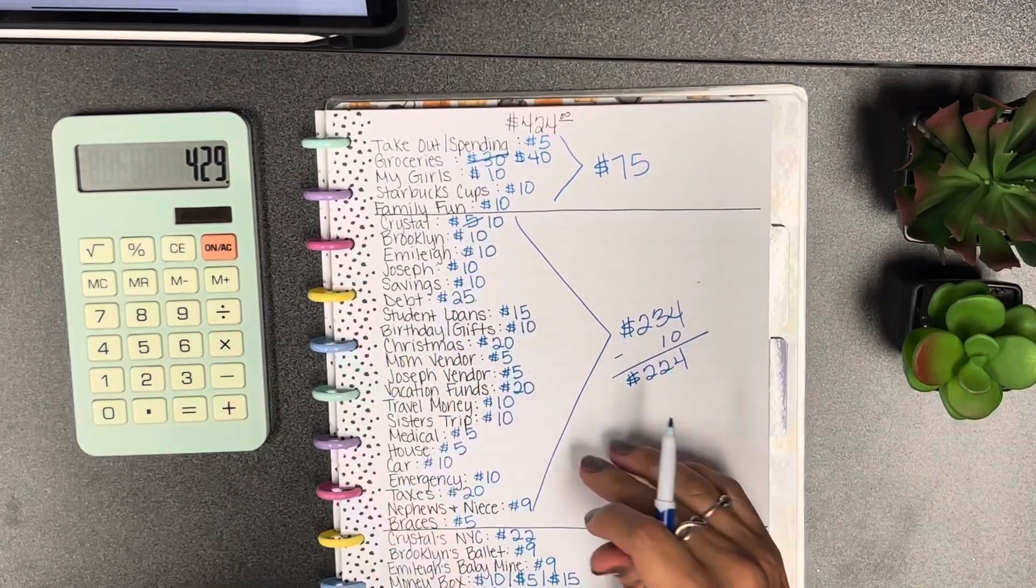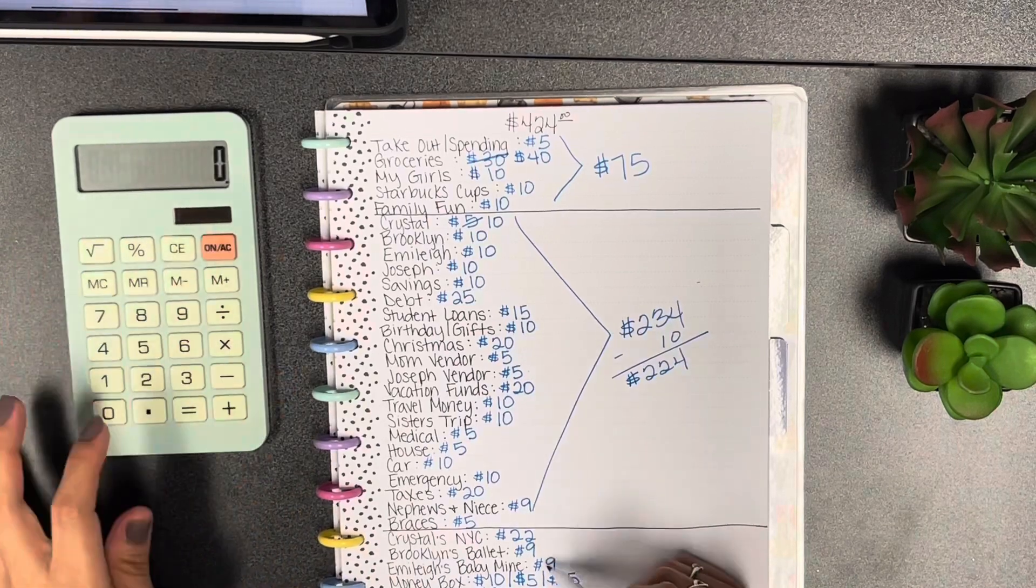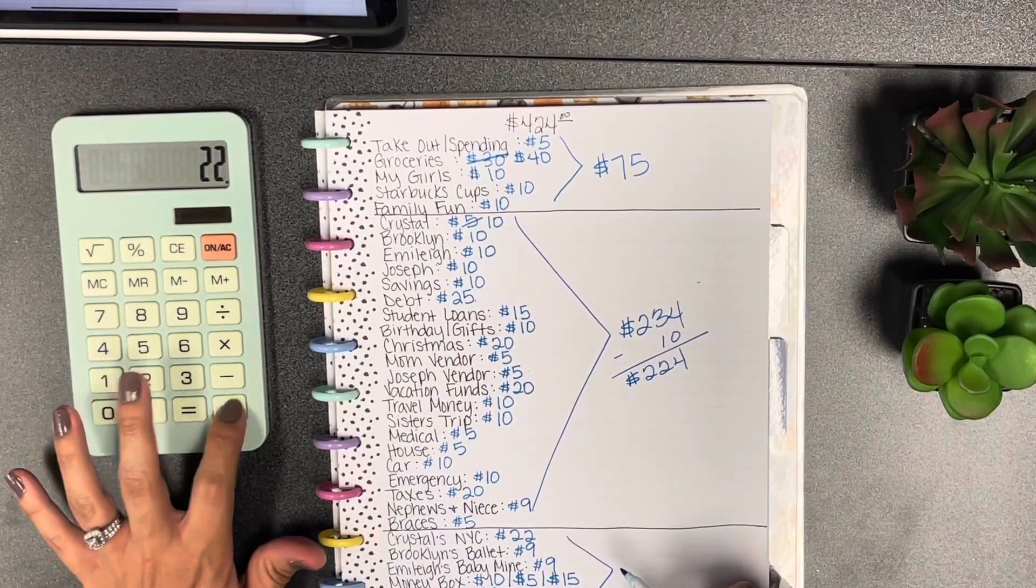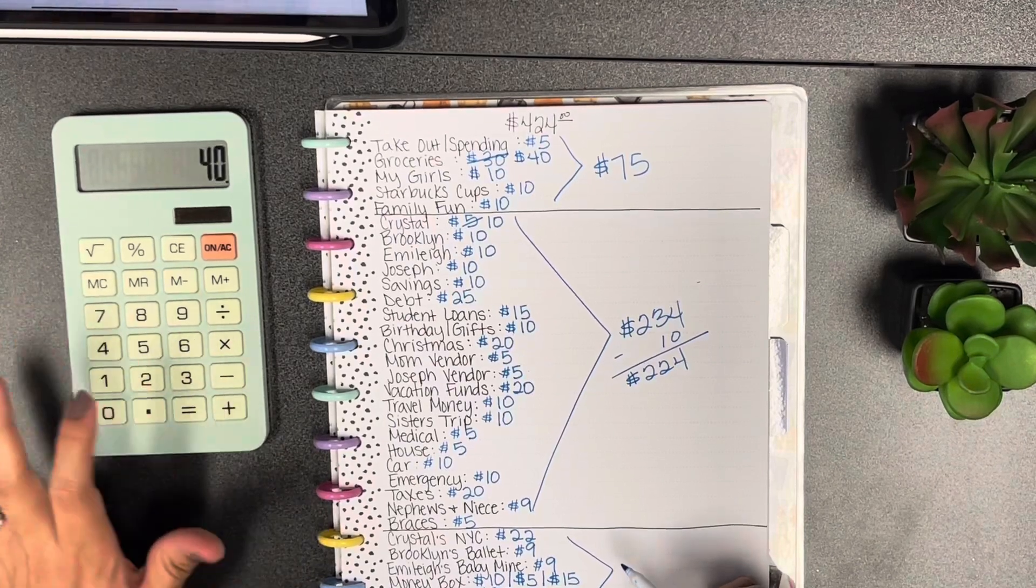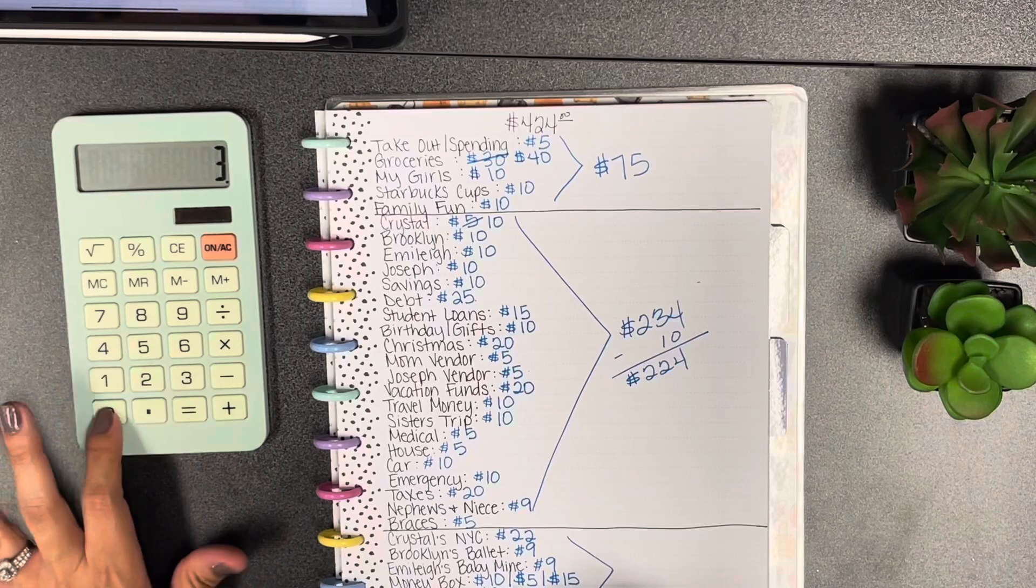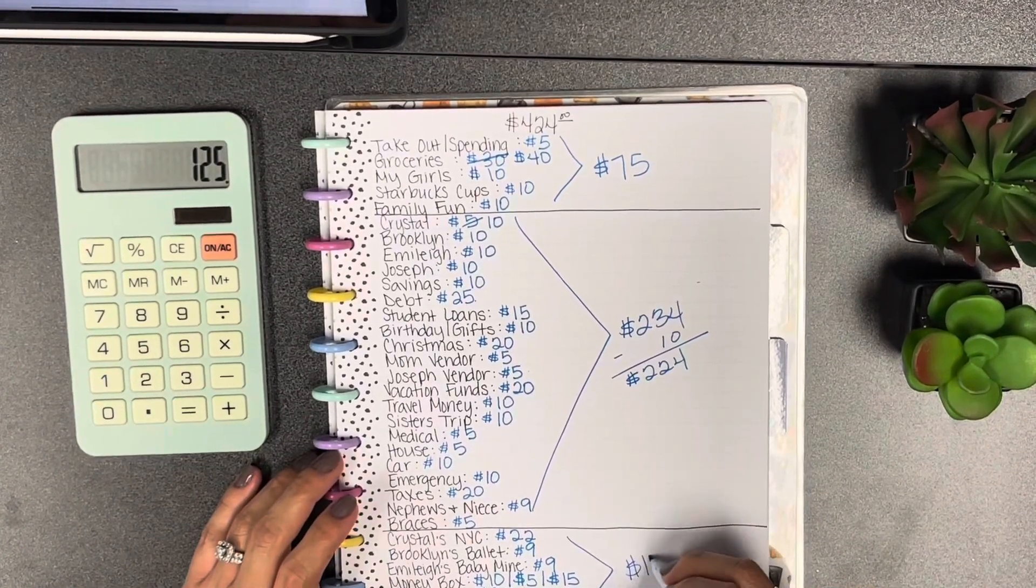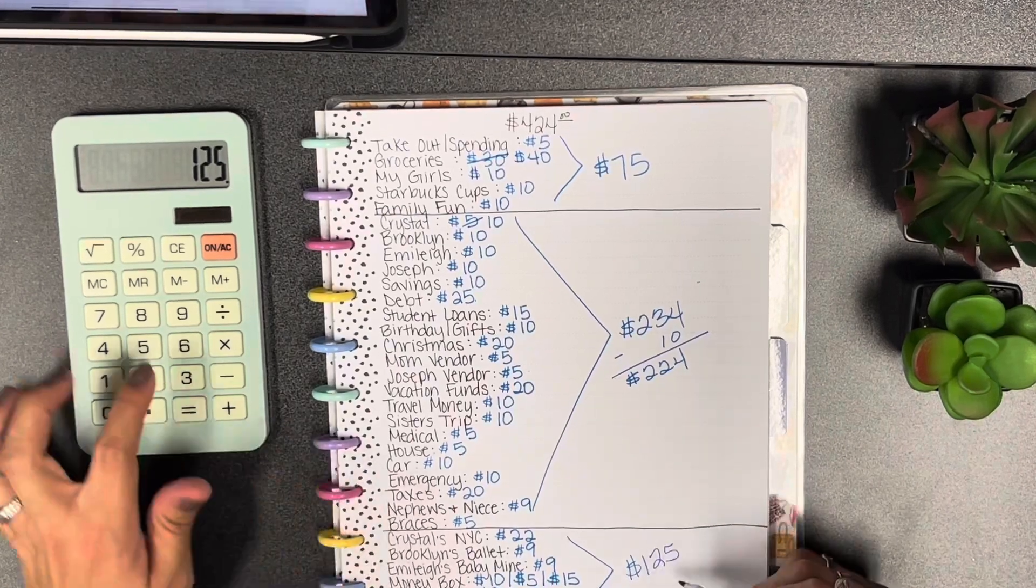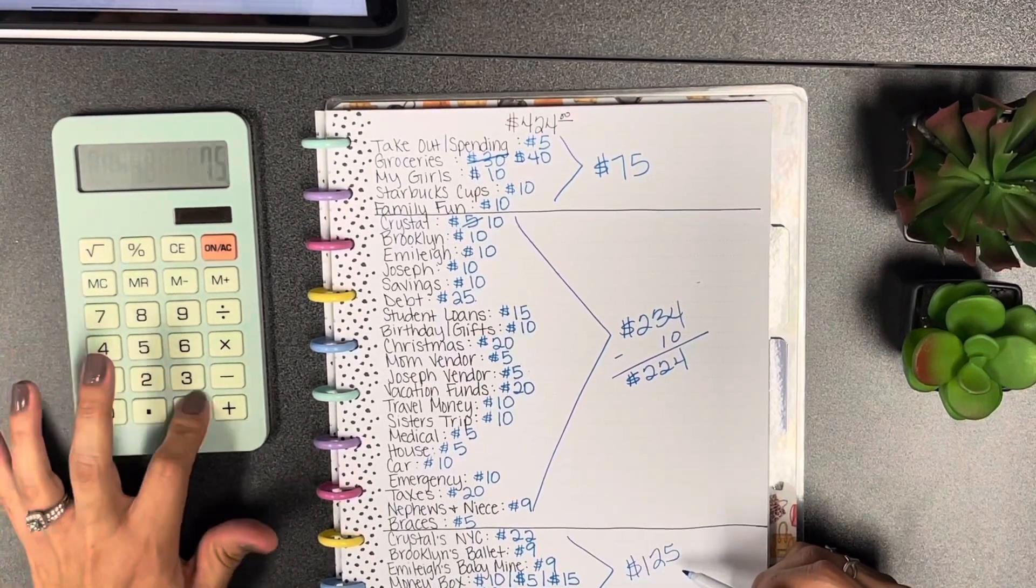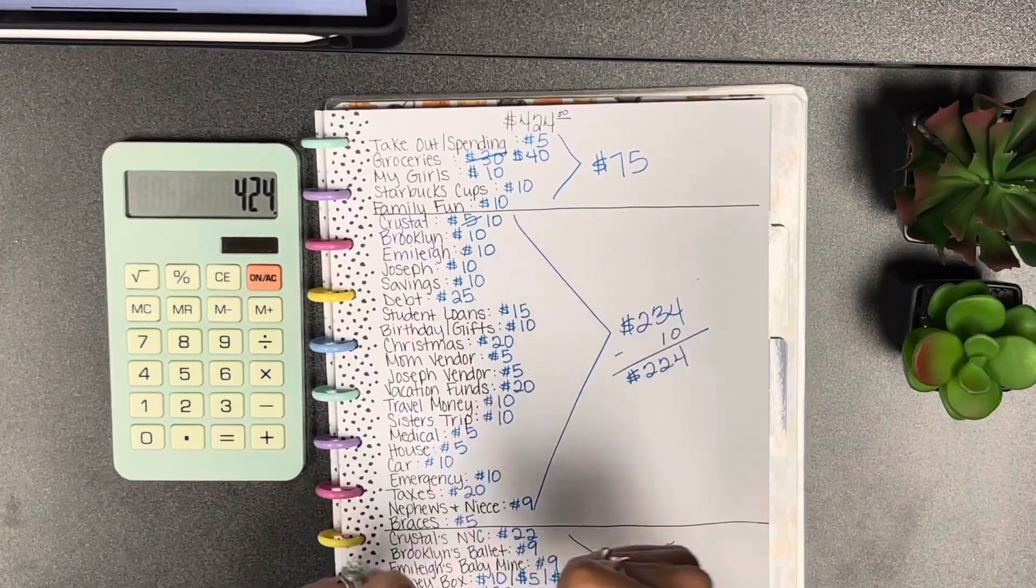So this section is 224, and then here on the savings challenge area this is 125. So 125 plus 224 plus 75 should equal to 424, which is correct.